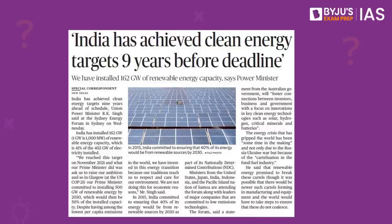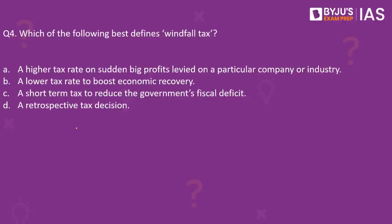Union Power Minister Shri R.K. Singh has pointed out that India has achieved its clean energy targets nine years ahead of schedule. He also notes that renewable energy now comprises 41% of total electricity installations across the country.